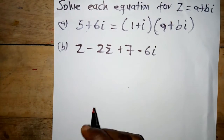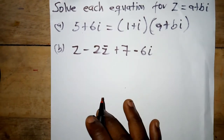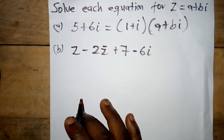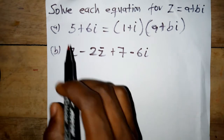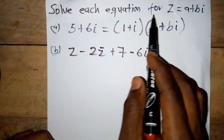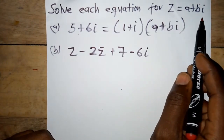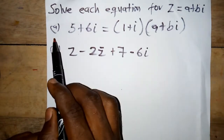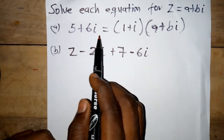Welcome to my channel. Let's call this a complex number question. We need to solve each equation for z equals a plus bi. In the first one, we have five plus six i equal to one plus i multiplied by a plus bi.